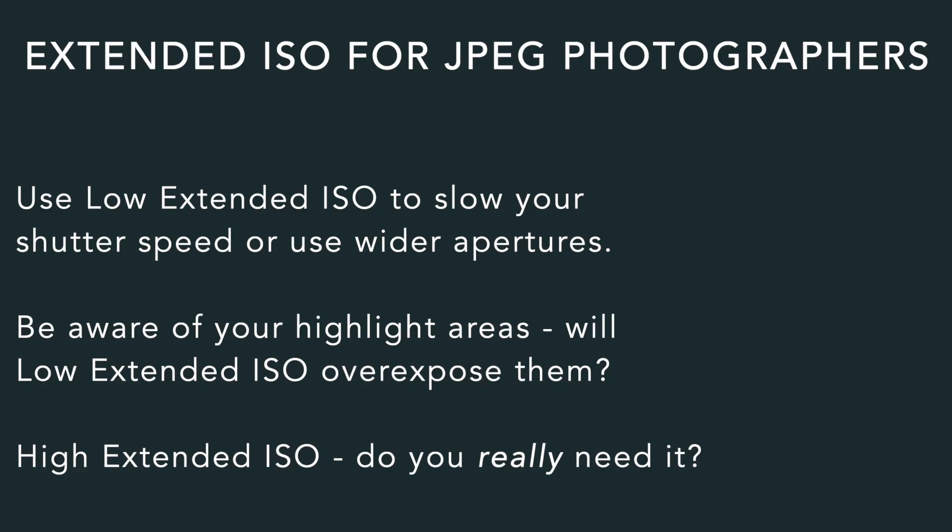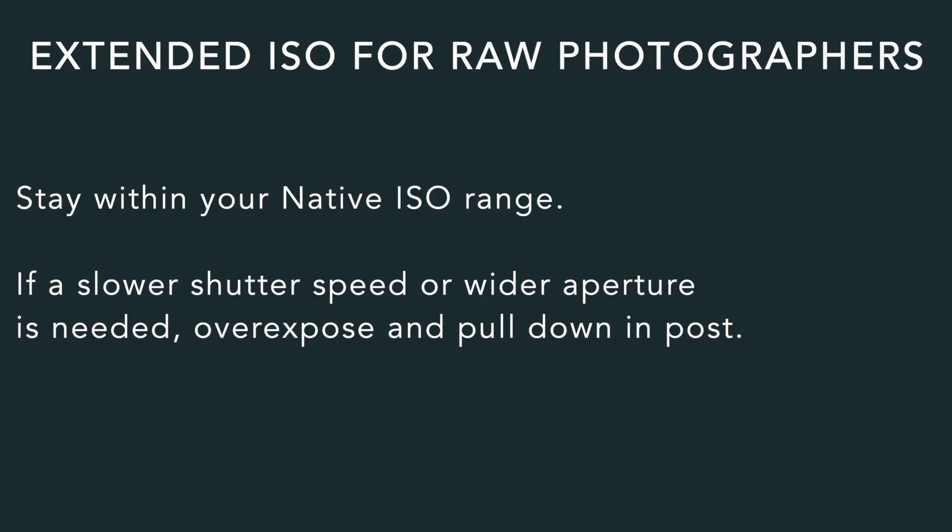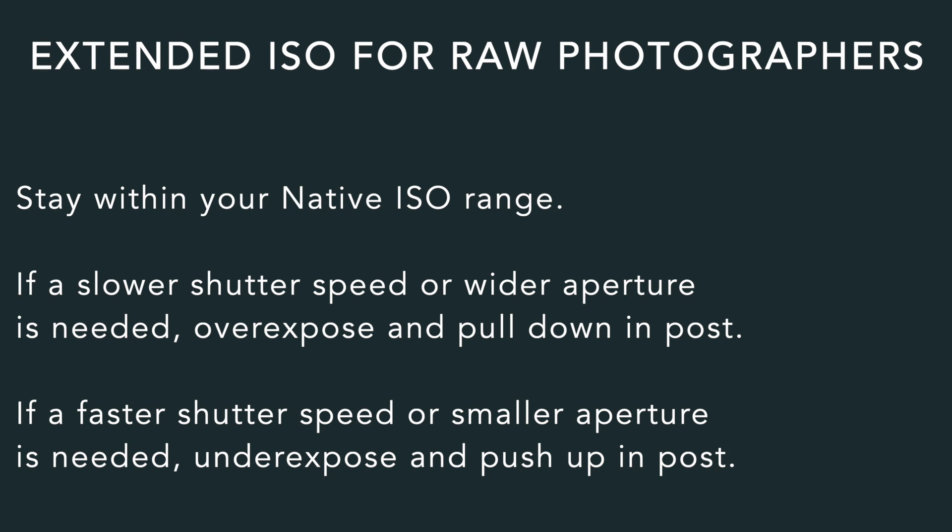The high extended ISO ranges, though, will have a lot of noticeable noise. But if the cost of getting a fast enough shutter speed for sharpness is worth it, then go for it. For RAW-only photographers, however, I still think you'd be better off shooting within the native ISO. Overexpose that RAW file at the low native limit for a slower shutter speed or wider aperture, being careful not to clip the highlights, and then you have more control to bring that exposure back down in your RAW processor. And underexpose at the high native limit if you need a fast shutter speed, then push it up in your RAW processor. You just have more control doing it yourself that way.